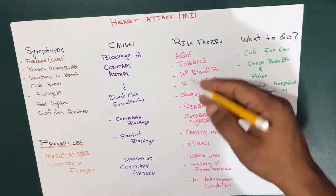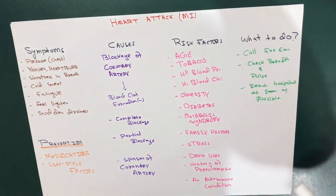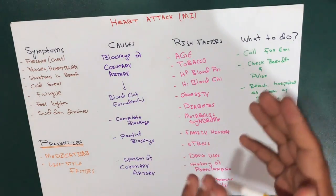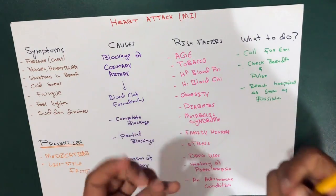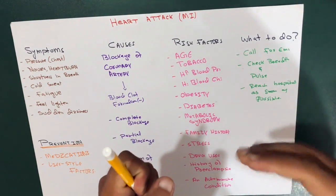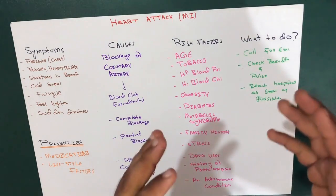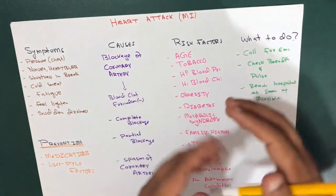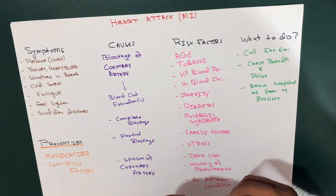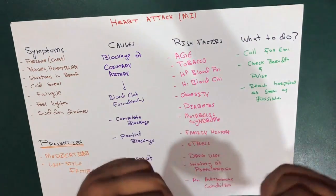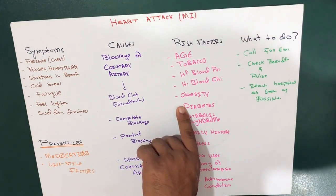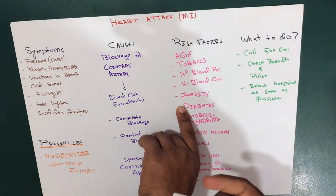High blood cholesterol also plays a large role. High levels of LDL — low-density lipoprotein, the bad cholesterol — are most likely to narrow arteries. High triglycerides also raise the risk. However, high levels of HDL — high-density lipoprotein, the good cholesterol — actually lower your risk of heart attack.